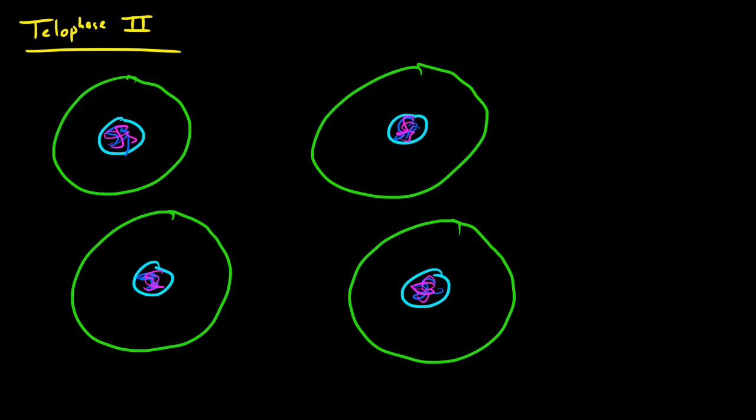So essentially what's going to happen at the end of meiosis 2, at the end of telophase 2: first of all the spindles are going to disappear, we don't need them anymore, we're done with them. Another thing is that the nuclear membrane is going to form in all of these 4 cells and your chromosomes are going to spread out just like I said.